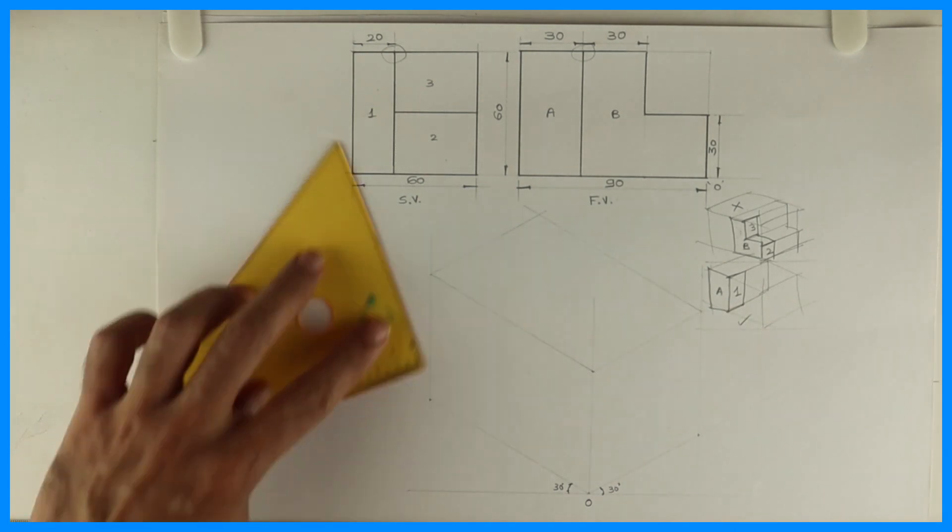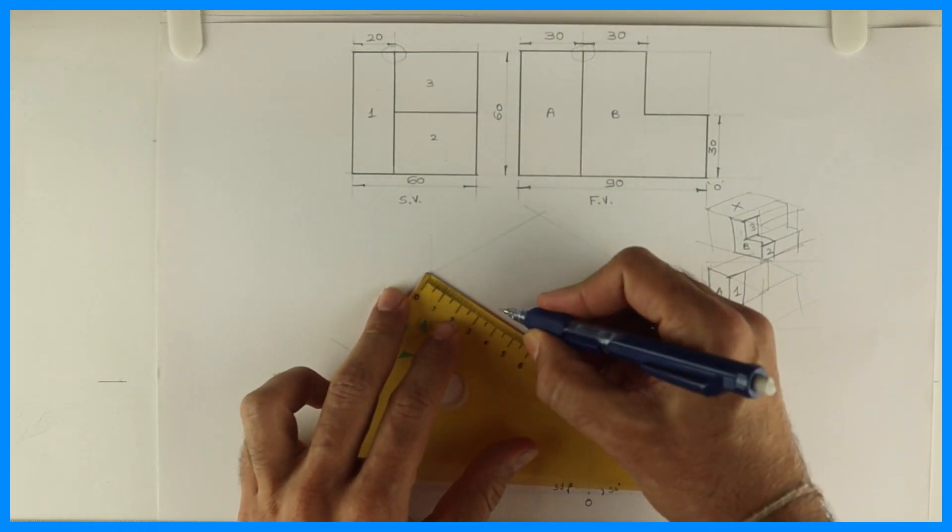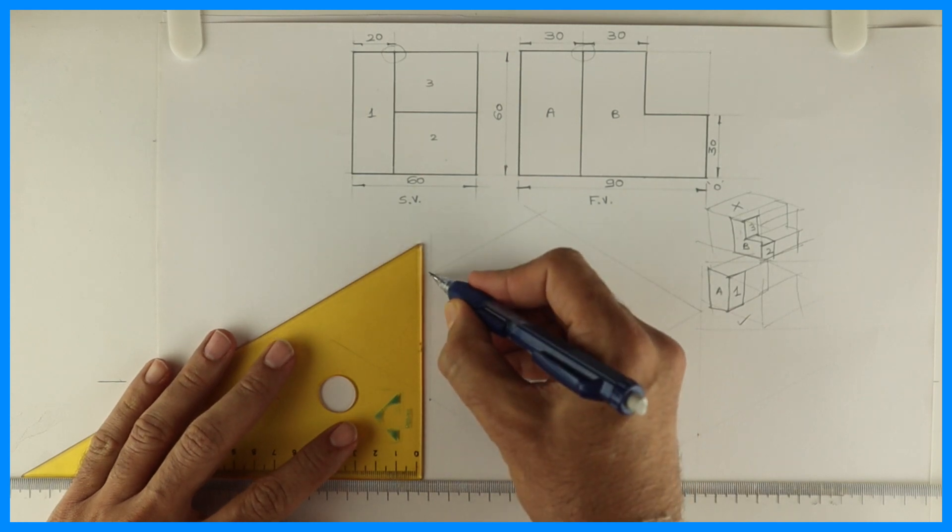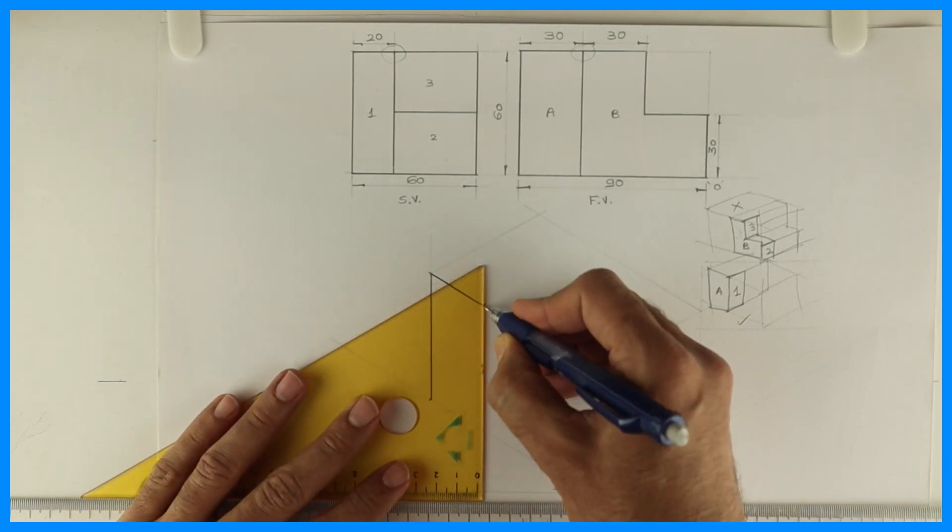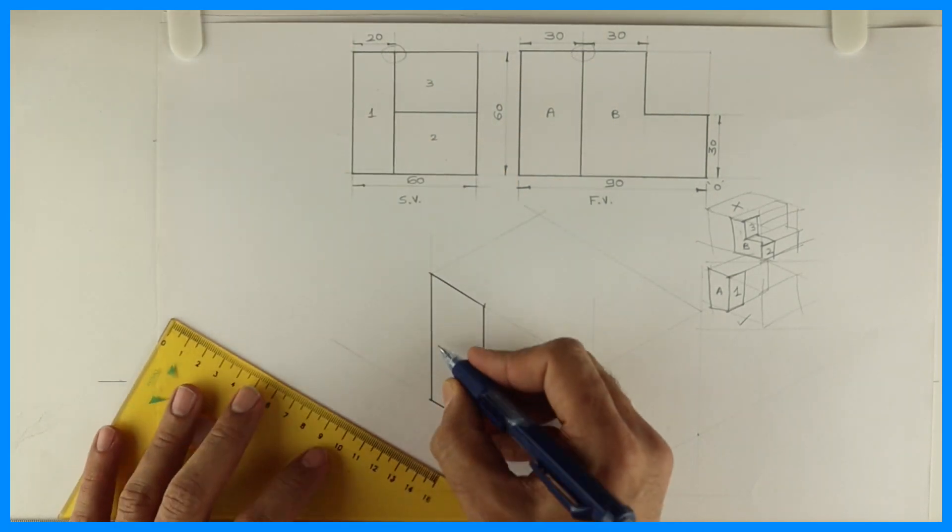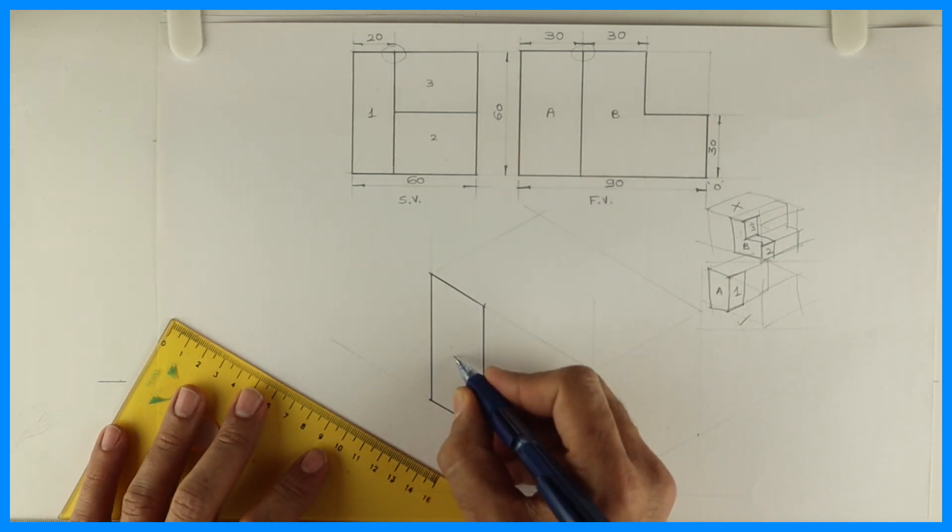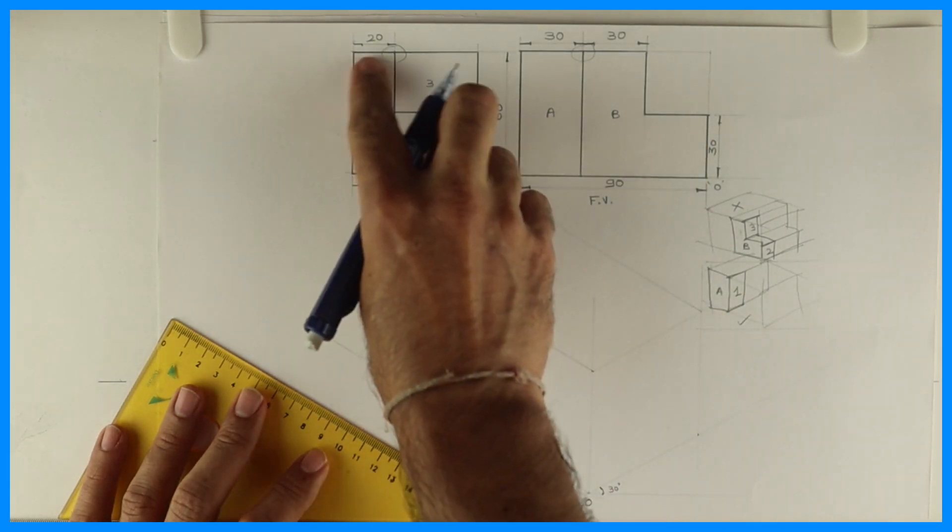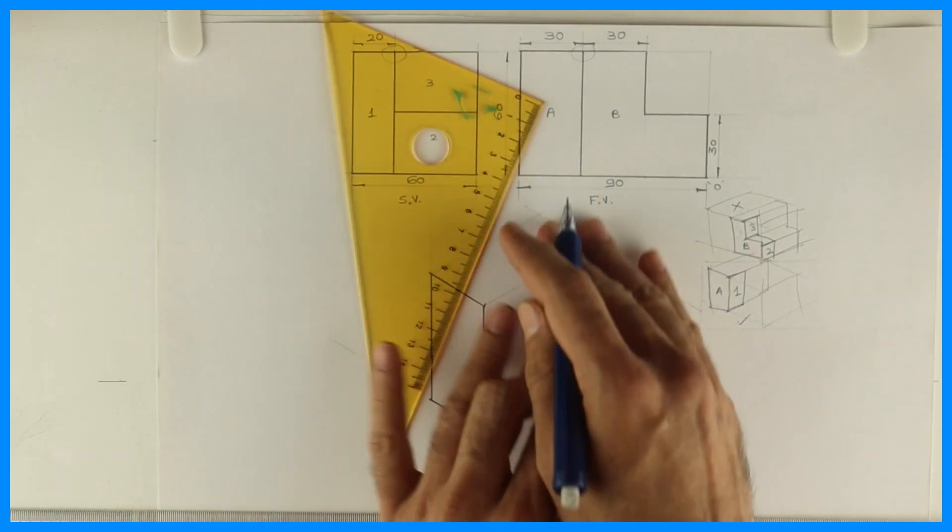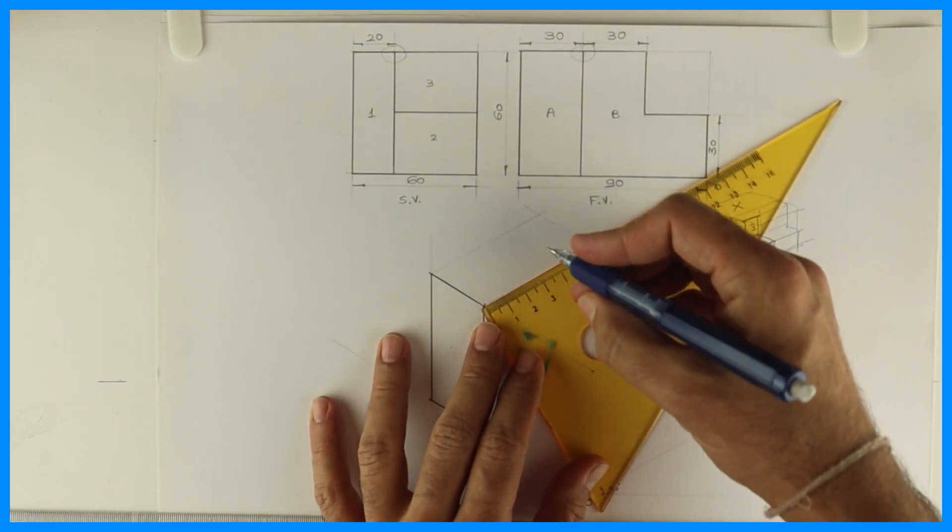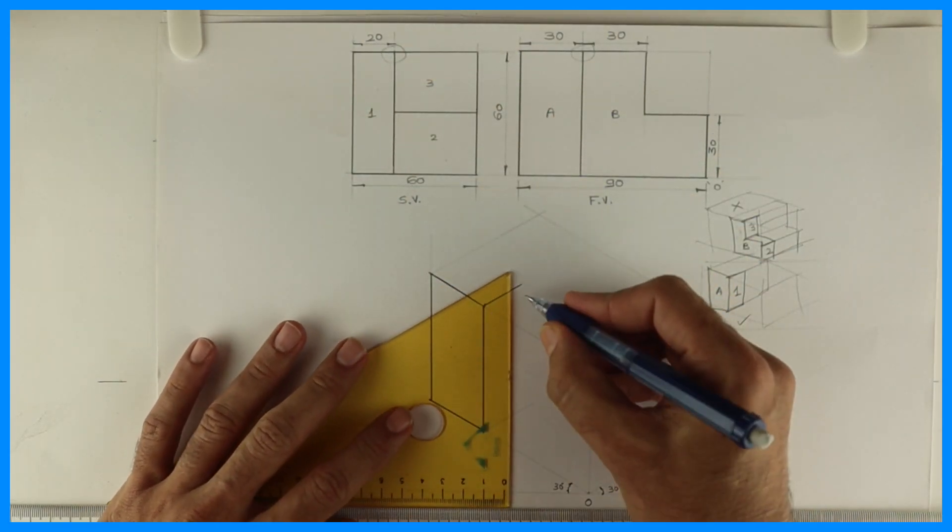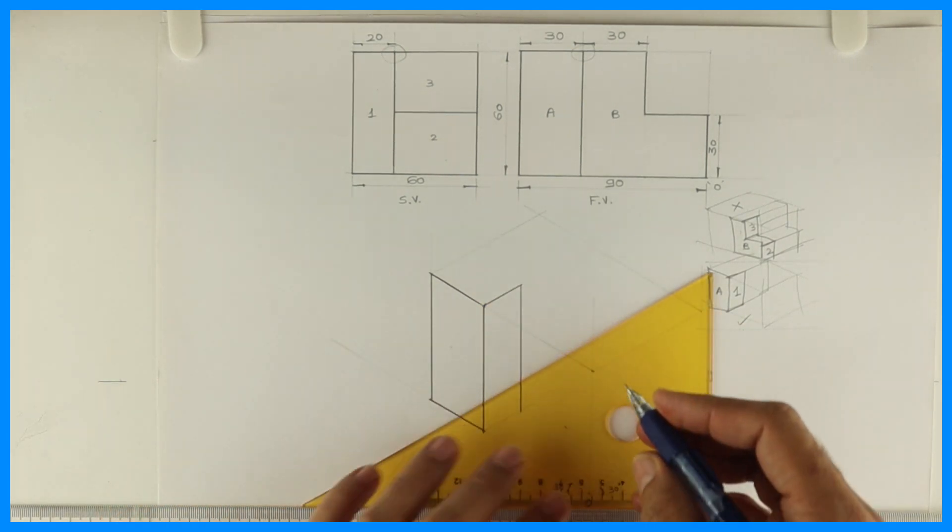So we will start with the second option, A. We will take 30, then we will draw a vertical line. This is A, right? How much you have to go inside? 20. So I will go inside by 20. See this.